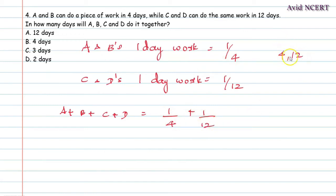So LCM for 4 and 12: 4 one times, 4 three times, and again 3 one times. 4 times 3 is 12. So 12 divided by 4 is 3, 12 divided by 12 is 1. Multiply the numerator by the same number. So 3 plus 1.